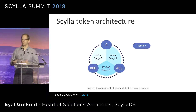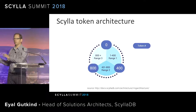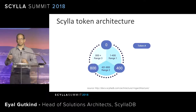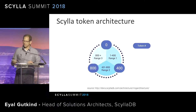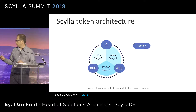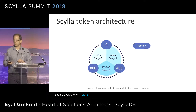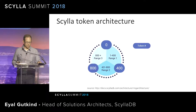We use something called murmur3 hashing function to make sure that every node will have an equal number of partitions — to prevent hotspots. That's a great architecture because it guarantees that the load on each one of those nodes is going to be equal and even. This is a simplistic view because we omitted the notion of V nodes, which adds an additional layer of resharding inside the cluster.